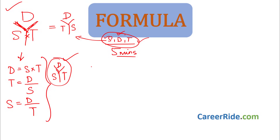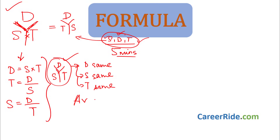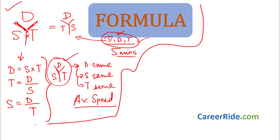Now let us move on to another concept of speed, distance and time — what are the types of sums that may be asked. In speed, distance and time, the types of sums are: either the distance is same, or the speed is same, or the time is same, or there may be some which ask for the average speed of the entire journey. Only these things are asked when it comes to speed, distance, time. Now let us move on to problems on trains.